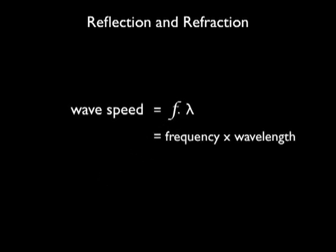The wave speed is equal to frequency times wavelength, or the wavelength divided by the period.